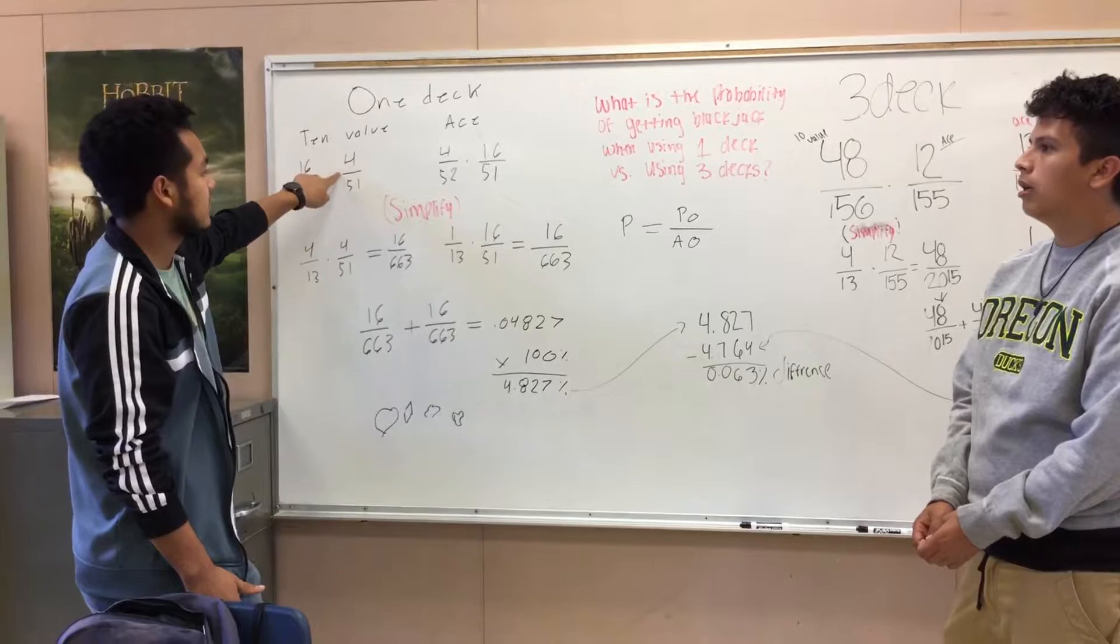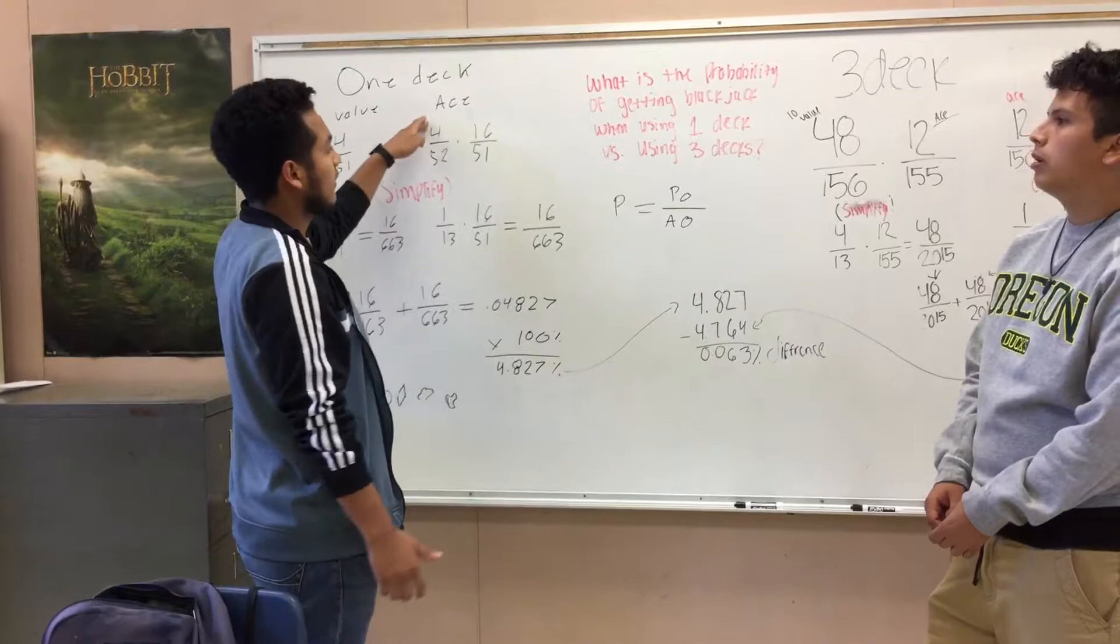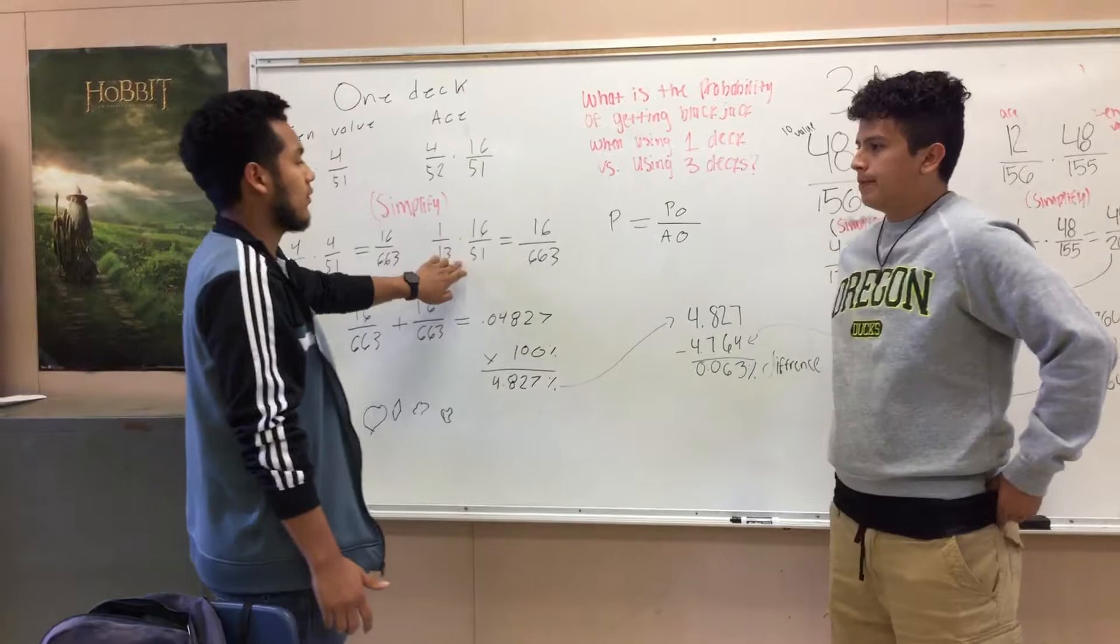Times 4 out of 51 cards for the remainder of the aces. You simplify that, giving you 4/13 times 4/51 equals 16/663. Then we do it again: the ace followed by the 10-value card, which is 4 out of 52 times 16 over 51. You simplify that and it gives you 1/13 times 16/51 equals 16/663.